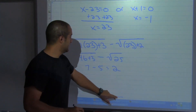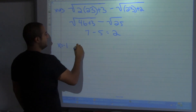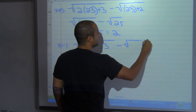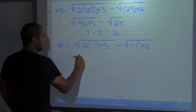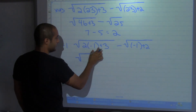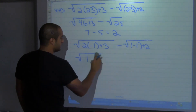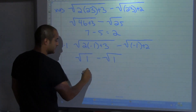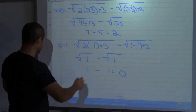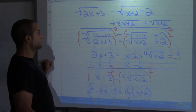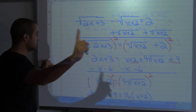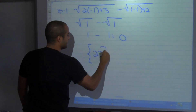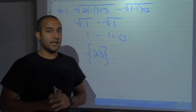Now trying x equals negative 1: square root of 2 times negative 1 plus 3, minus square root of negative 1 plus 2. That's square root of 1 minus square root of 1, which equals 0. But it's supposed to equal 2, not 0. So x equals negative 1 is an extraneous solution. My solution set is just 23.